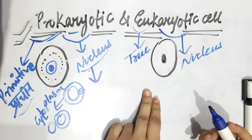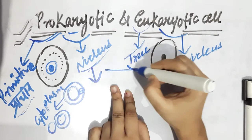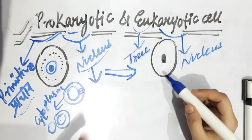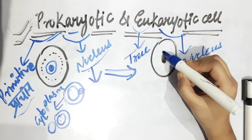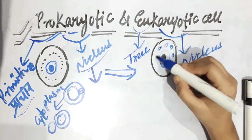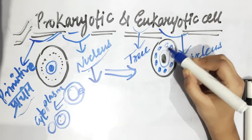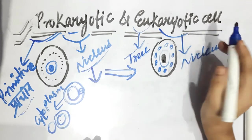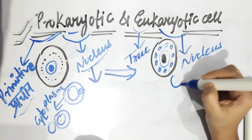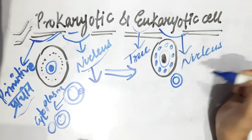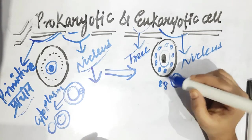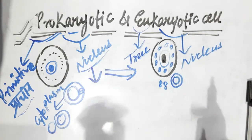Eukaryotic is an evolved and more advanced type of cell. It has a membrane around the nucleus and contains many cell organelles with good functions — some with membranes and some without. This is the difference between prokaryotic and eukaryotic cells. I hope this topic is now clear.